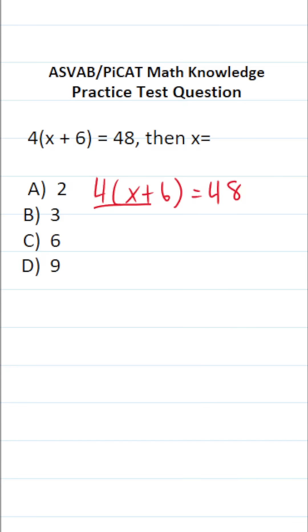So the first thing I'm going to do in this case is divide both sides of this equation by 4. In doing so, this crosses out over here, leaving me with x plus 6 over here. What is 48 divided by 4? You should be able to do this mentally. 4 divided by 4 is 1, 8 divided by 4 is 2.